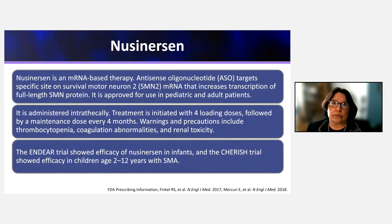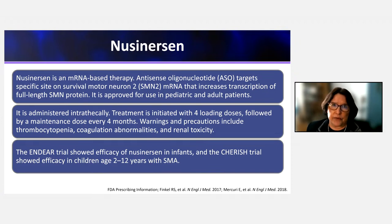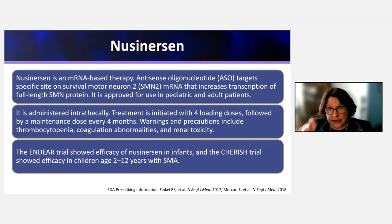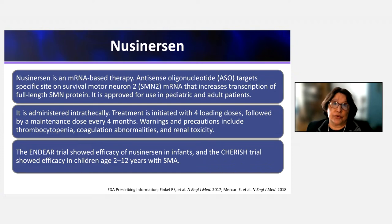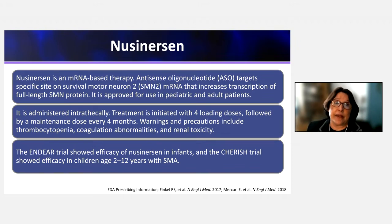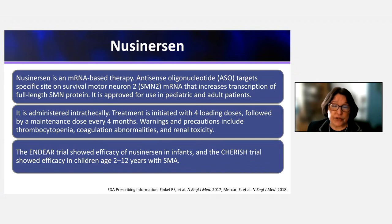Let's focus on the pathophysiology and mechanism of action. The two medications approved for use in adults are nusinersen and risdiplam; onasemnogene is only for young children. Nusinersen is an mRNA-based therapy — an antisense oligonucleotide that acts at a specific site on exon 7 of the SMN2 gene so that, instead of producing non-functional delta-7 SMN protein, exon 7 is included and more full-length SMN protein is transcribed. It is approved for use in pediatric and adult patients.